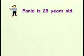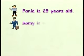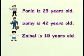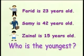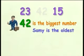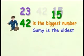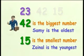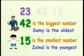Farid is 23 years old. Sami is 42 years old. And Zainal is 15 years old. Who is the oldest? Who is the youngest? We have 23, 42, and 15. The oldest will be the person whose age is the biggest number. 42 is the biggest number, so the oldest person is Sami. The youngest will be the person whose age is the smallest number — that is 15. So Zainal, who is 15 years old, is the youngest.